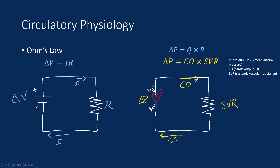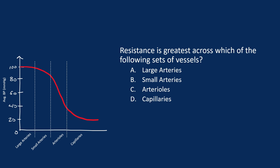Here is the average blood pressure as blood moves through different parts of the arterial circulation. Blood flows from high to low pressure: we start with high pressure in the large arteries, and pressure decreases as we move through the small arteries, the arterioles, and eventually to the capillaries.